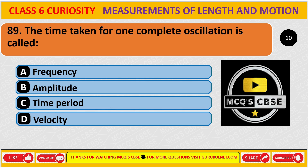The time taken for one complete oscillation is called — and the correct answer is C, time period.